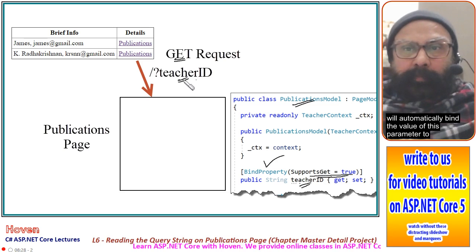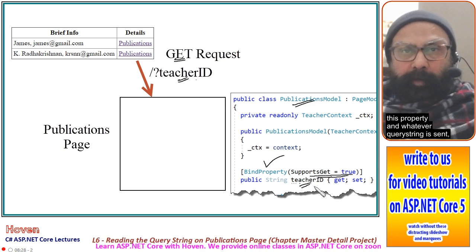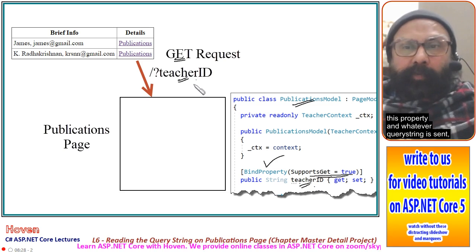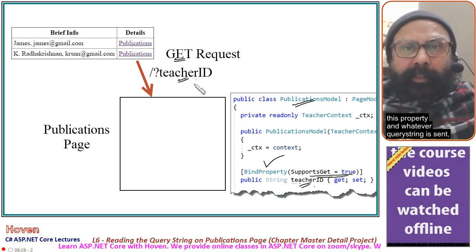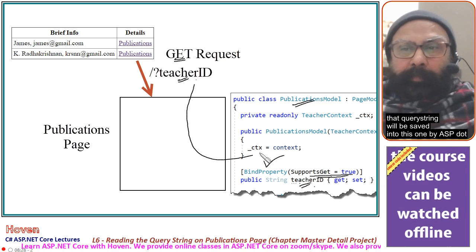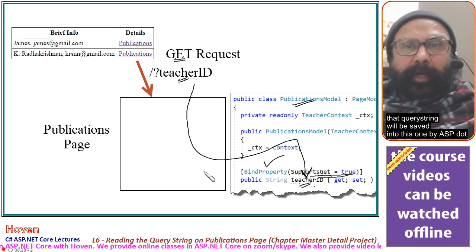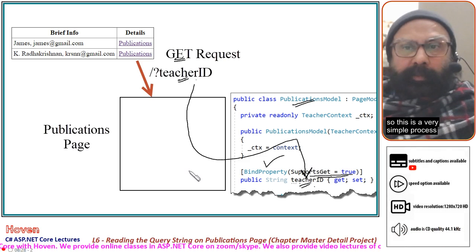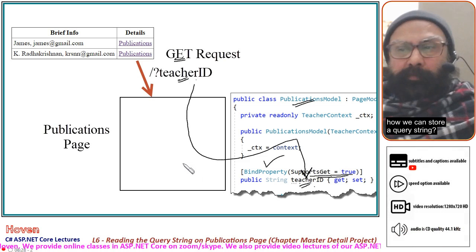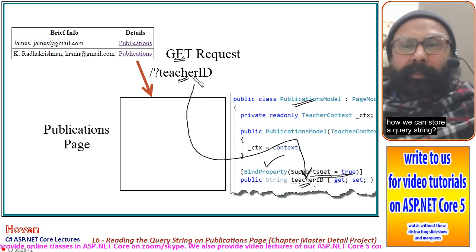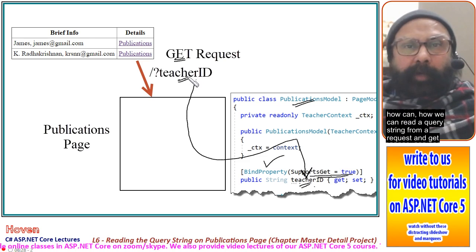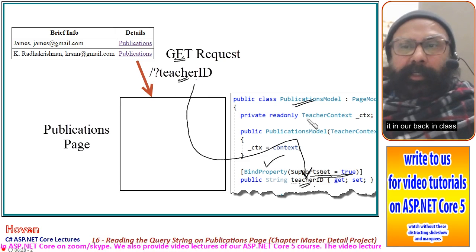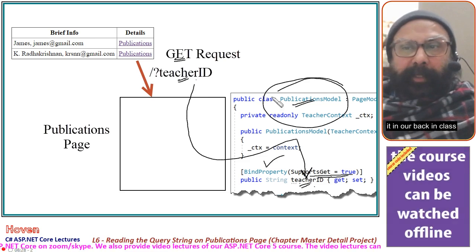ASP.NET Core will automatically bind the value of this query string parameter to this property. Whatever query string is sent will be saved into this property by ASP.NET Core. This is a simple process for reading a query string from a request and getting it into our backing class.